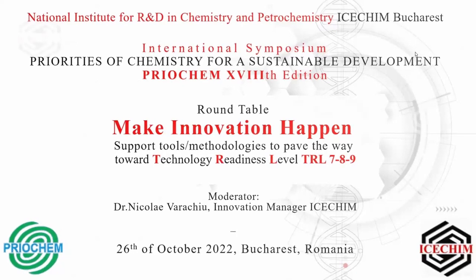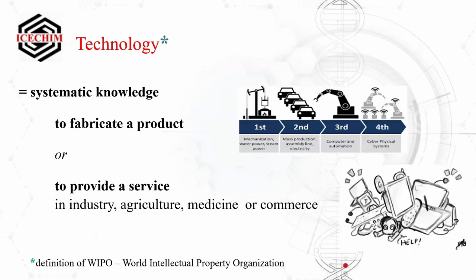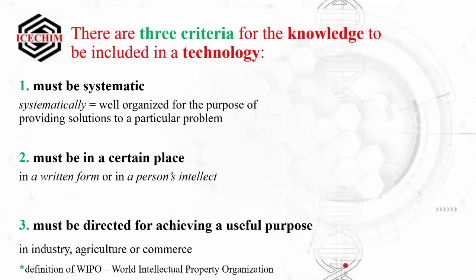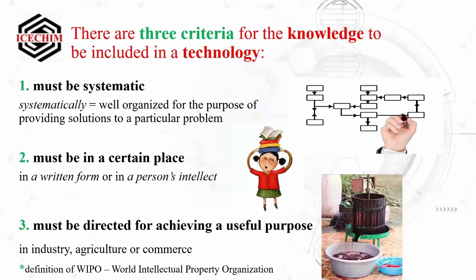If we discuss about innovation and technology transfer, let's have a short view of what we propose: a definition used by the World Intellectual Property Organization, which helps us protect our work and intellectual property. Technology is defined as systematic knowledge to manufacture a product or provide a service in industry, agriculture, medicine, or commerce. Not all knowledge could be inside the technology. WIPO proposed three criteria: to be systematic, to be in a certain place in written form or as personal intellect, and — very importantly — it must be directed toward achieving a useful purpose for industry, agriculture, or commerce in society.